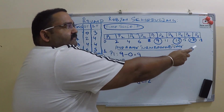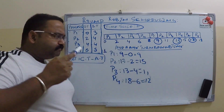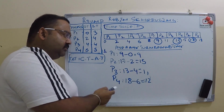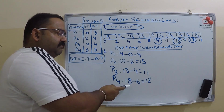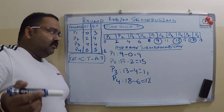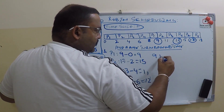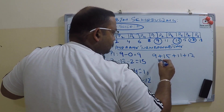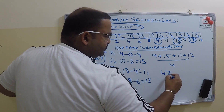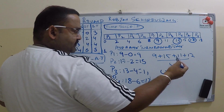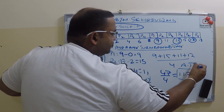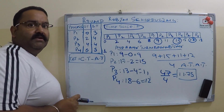P2 completed at time 17 and arrived at time 2, so turnaround time = 17 − 2 = 15. P3 completed at time 13 and arrived at time 4, so 13 − 4 = 11. P4 finished at time 18 and arrived at time 6, so 18 − 6 = 12. The average turnaround time is (9 + 15 + 11 + 12) / 4 = 47 / 4 = 11.75 seconds.